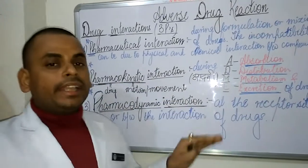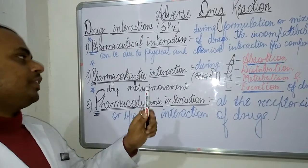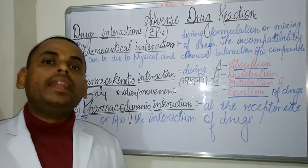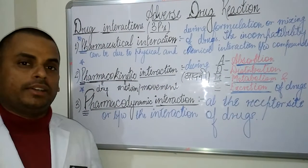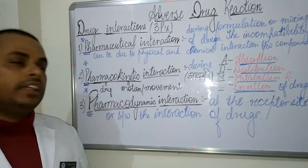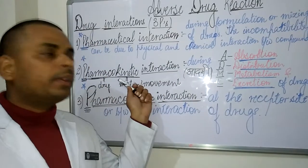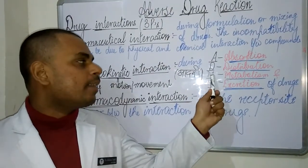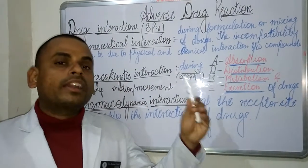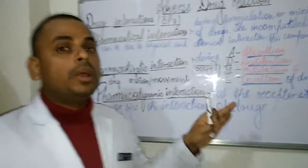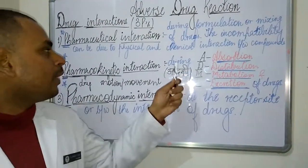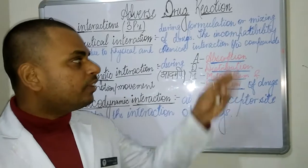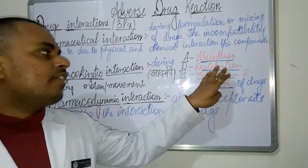The adverse drug reaction occurring due to pharmacokinetic interaction is seen when a drug is administered into the human body and moves through it. The pharmacokinetic interactions can be better remembered using the initials ADME — A, D, M, and E — where every letter refers to a pharmacokinetic process occurring in the human body. The first A refers to absorption of the drug, such as when we take a drug orally or by any parenteral route.